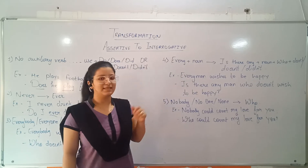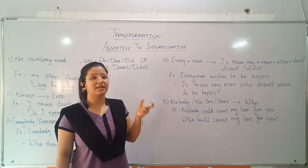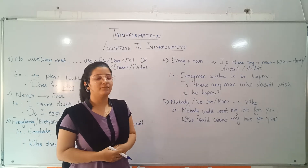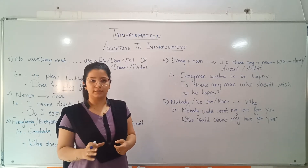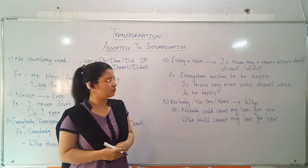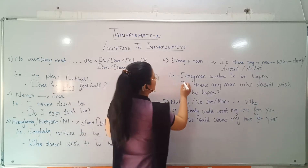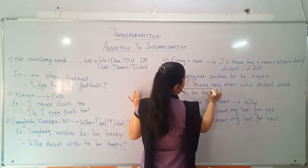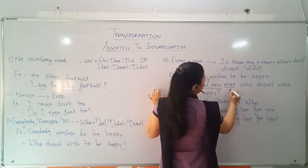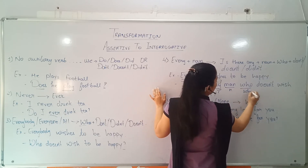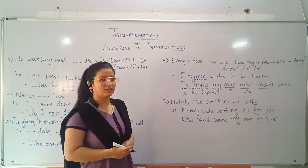Next rule: if there is 'every' plus a noun — for example 'man' or 'girl' — we will replace 'every' with 'is there any', then write the noun, then write 'who', and add don't, doesn't, or didn't as per the tense. For example, 'Everyone wishes to be happy.' Here, 'everyone' is replaced with 'is there any', then the noun from the sentence is used, then 'who', then 'doesn't wish to be happy'. The sentence becomes: 'Is there any man who doesn't wish to be happy?' ending with a question mark.